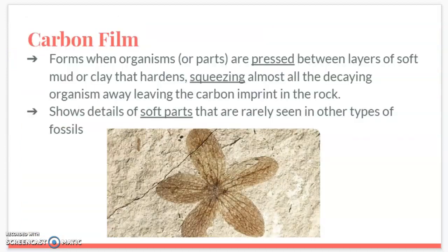Our fifth type of fossil is carbon film. This forms when organisms are pressed between layers of soft mud or clay, which then hardens and squeezes almost all of the decaying organism away, leaving just a carbon imprint on the rock. This is similar to a mold fossil in that we don't have the actual organism, just an imprint. Carbon films are really important because they show details of soft parts — like butterfly wings or flower petals — that we can't see in other fossil types, since soft parts decay much faster.